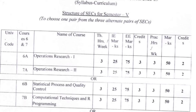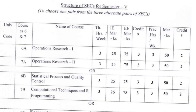In Section A, there are two papers: 6A and 7A. In Section B, there are two papers: 6B and 7B. In Section C, there are two papers: 6C and 7C.